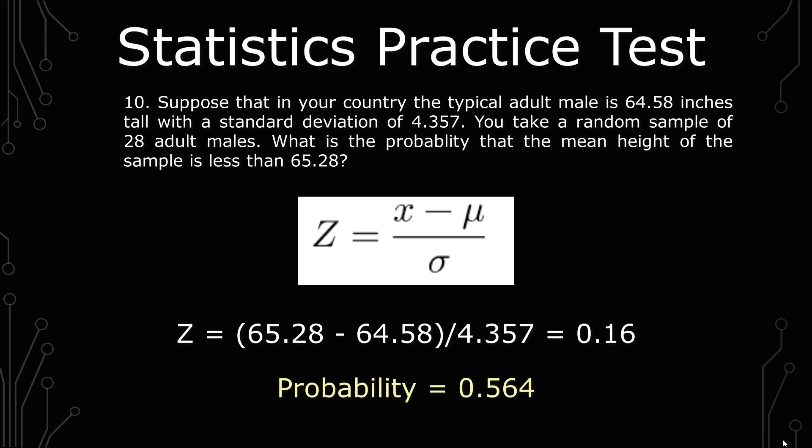You get the probability of 0.564. That's rounding, whether or not you use an Excel normal distribution approximation or the Z-table. If you have any questions, please leave them down in the comments section. Thank you for watching, and stay nerdy, my friends.